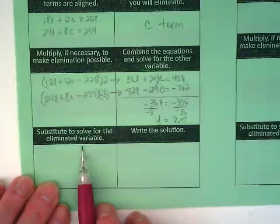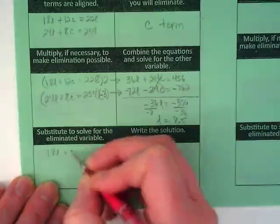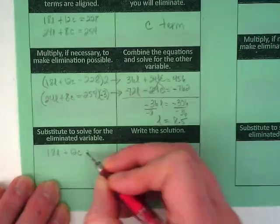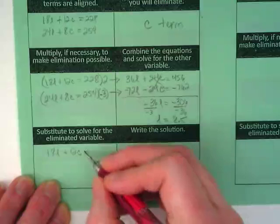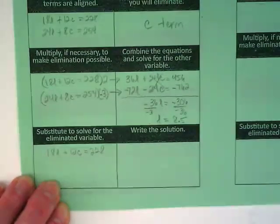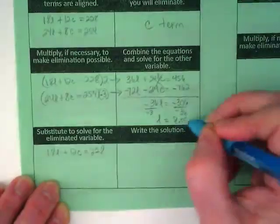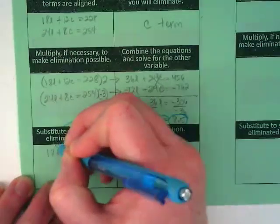I'm going to use the first equation. 18L plus 12C equals 228. And I'm going to take this 8.5 that we found is the L, and I'm going to bring it over here and substitute it in.